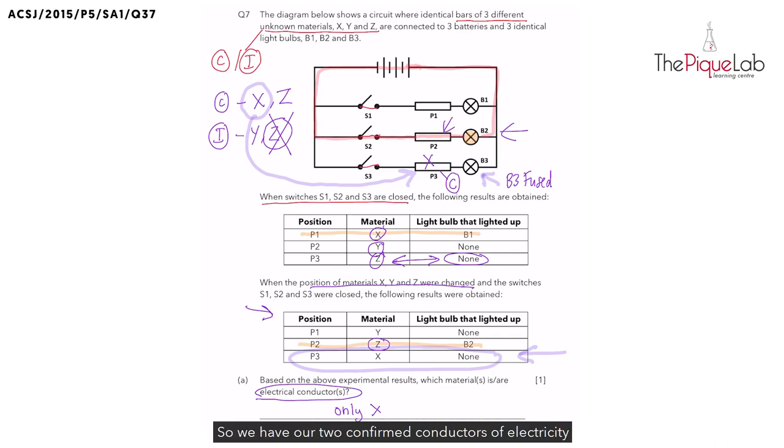So we have our two confirmed conductors of electricity as X and Z. What about material Y? Can we confirm that it's an electrical insulator? So even when Y was placed in position P1 like this, bulb B1 did not light up. Remember, bulb B1 was in working condition and lit up just now in table number one. So did material Y allow electricity to flow through? No, it did not. So we can confirm that Y is an electrical insulator which did not allow electricity to flow through.